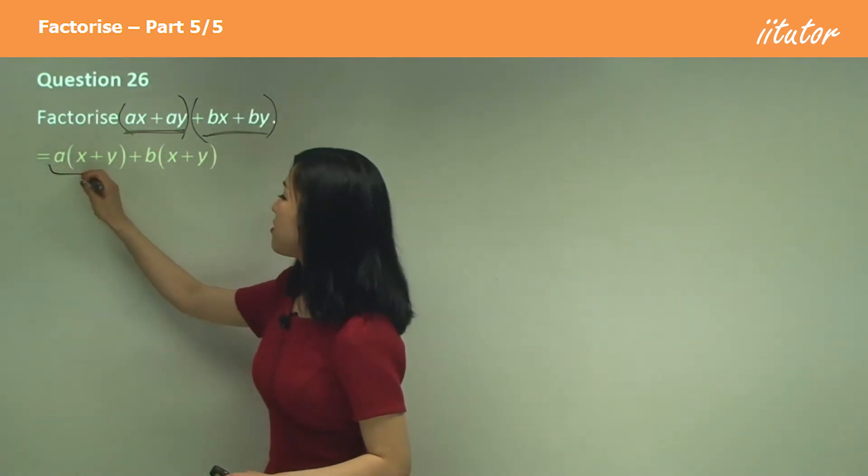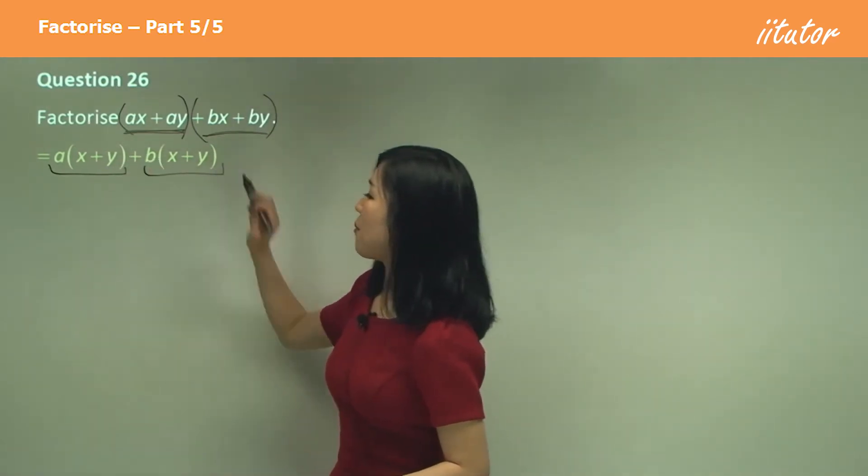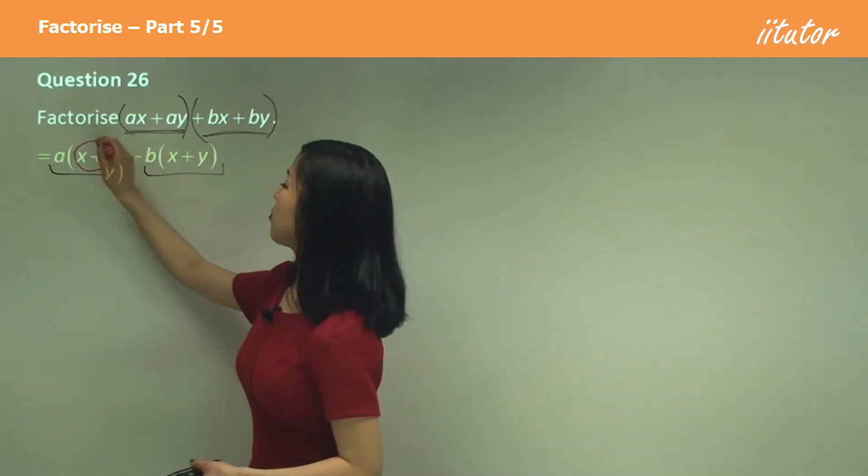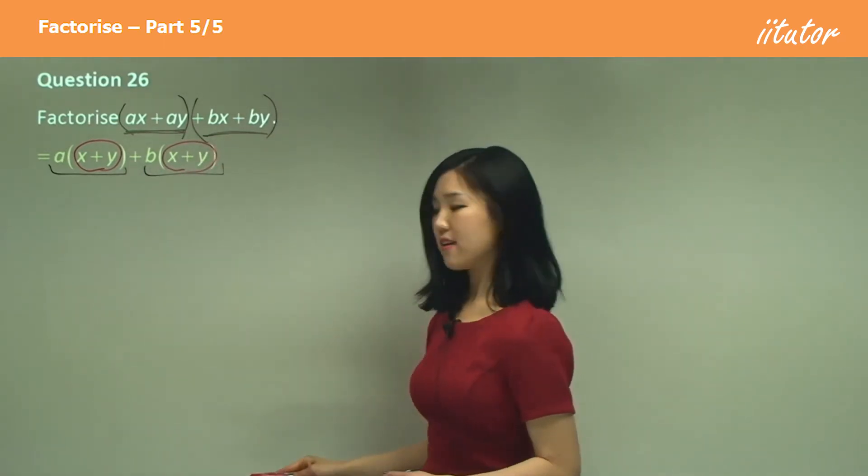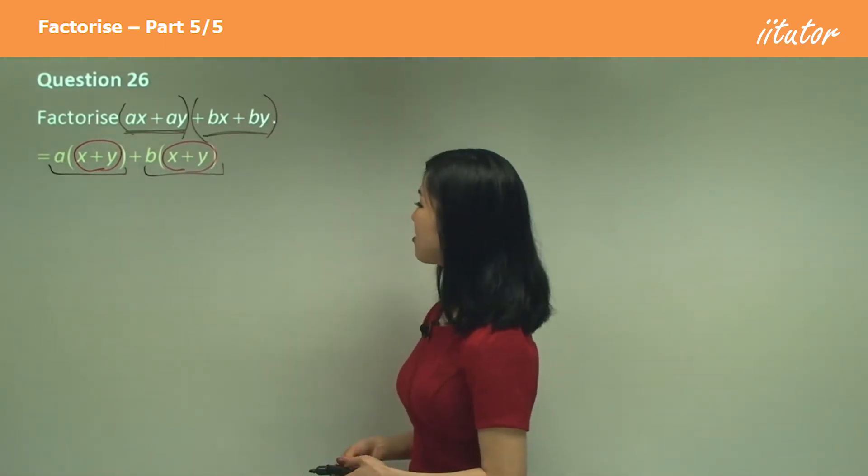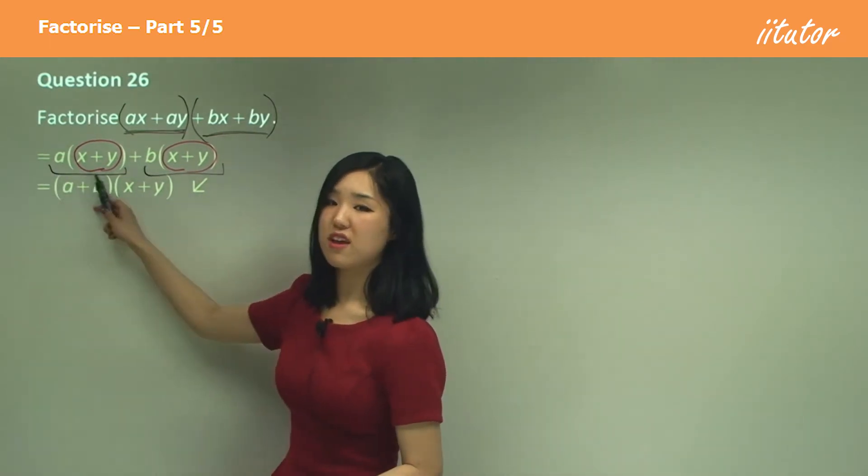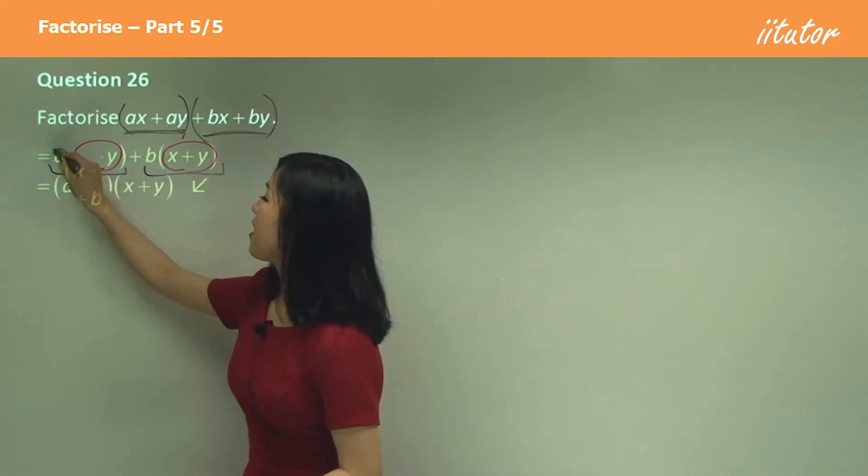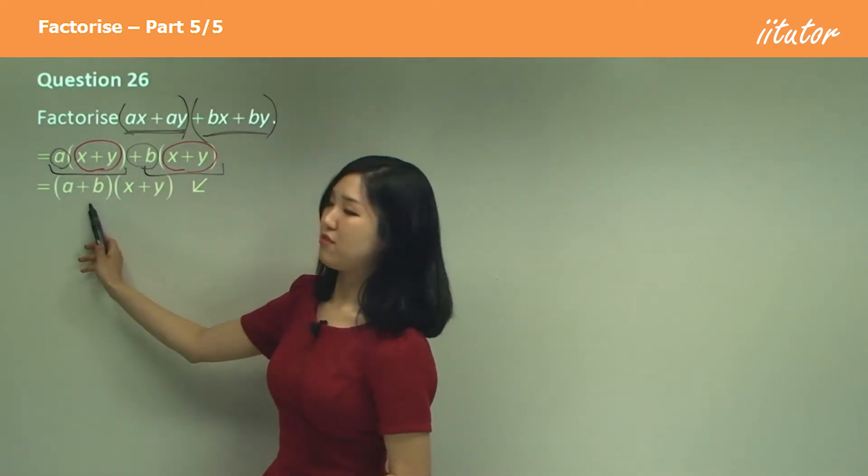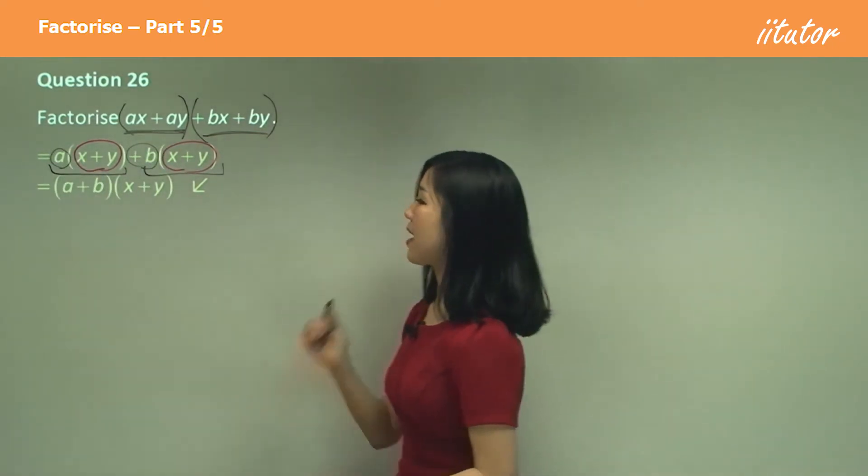Now we're left with this term and this term. See how x plus y is common? That's a common factor. So I'm going to take x plus y out. You can take it out in the front or the back, whatever you like, doesn't really matter. And we have a plus b left over. So a plus b times x plus y.